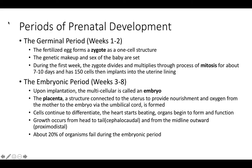The embryonic period runs from weeks three to eight. Upon implantation, the multicellular structure is called an embryo. The placenta — a structure connected to the uterus to provide nourishment and oxygen from the mother via the umbilical cord — is formed. Cells continue to differentiate, the heart starts beating, and organs begin to form and function. Growth occurs from head to tail and from the midline outward. About 20% of organisms fail during the embryonic period.